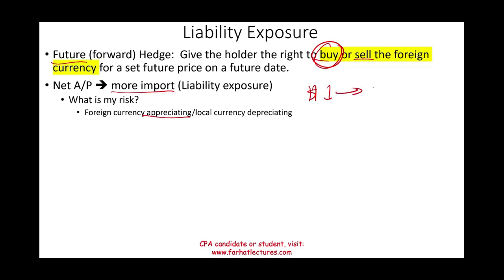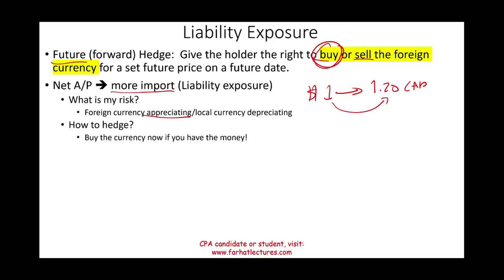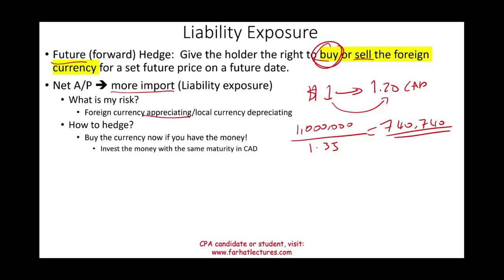Your risk is the foreign currency appreciating. For instance, 1 USD might only get you 1.20 CAD instead of 1.35 — the Canadian dollar went up and the U.S. dollar depreciated. So how do you hedge? If you have cash, go ahead and buy the currency now. With 1 million CAD exposure at the spot rate of 1.35, buying today means you pay $740,740 and you have peace of mind.